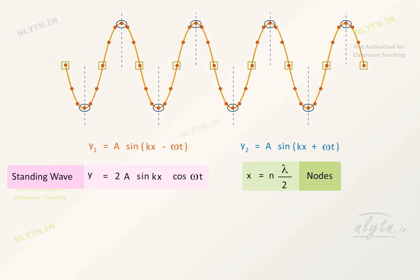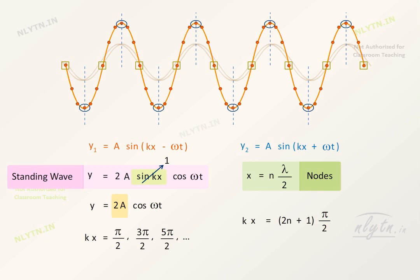And in the middle of two nodes is an antinode, for positions where this term has the maximum value. Using the maximum value of sine function, we can say that the maximum amplitude of the particle at an antinode is equal to double the amplitude of the constituent waves. And this happens at positions where kx is equal to pi by 2, 3pi by 2, 5pi by 2, etc., that is, for kx equal to 2n plus 1 into pi by 2. Solving this equation, we get the position of antinodes, which as expected are in the middle of nodes.